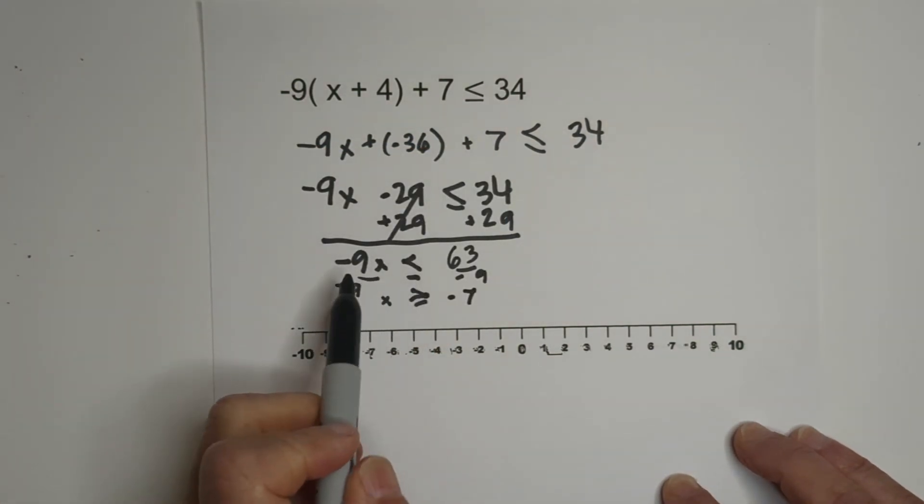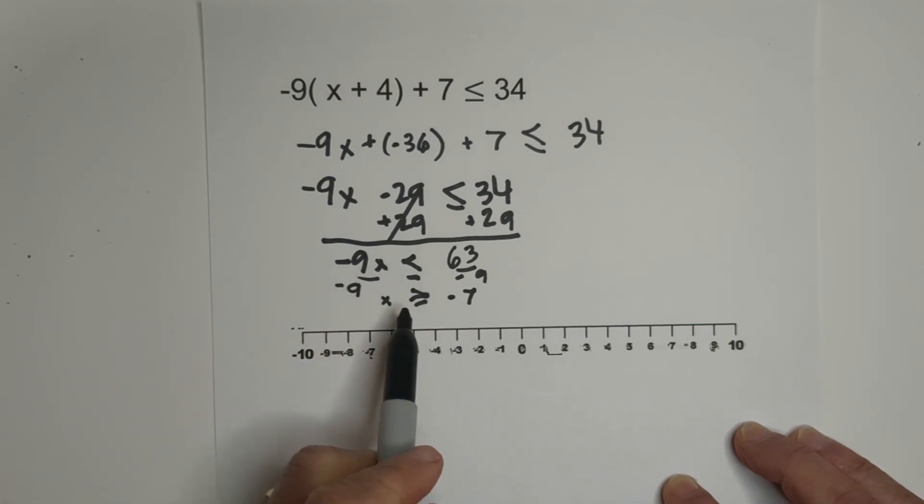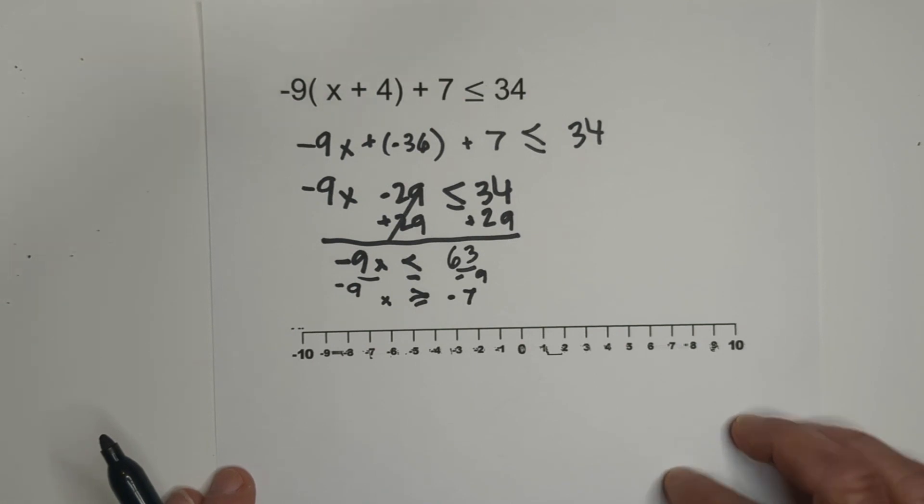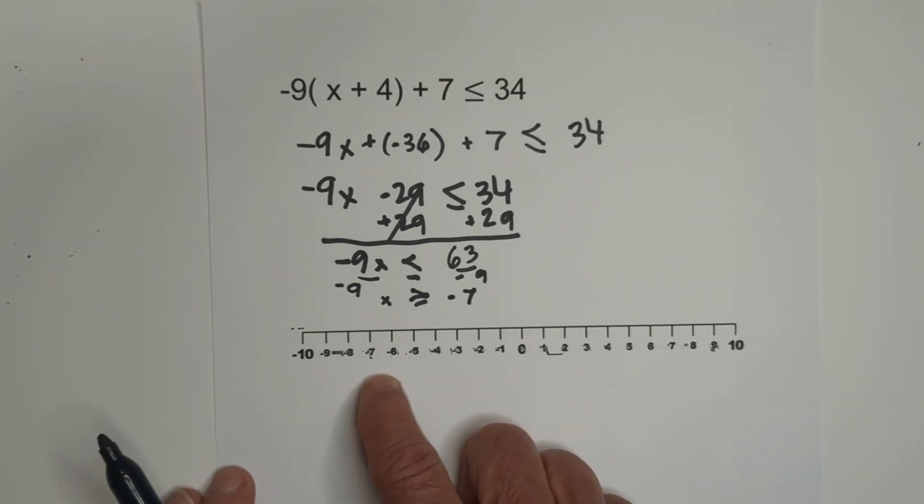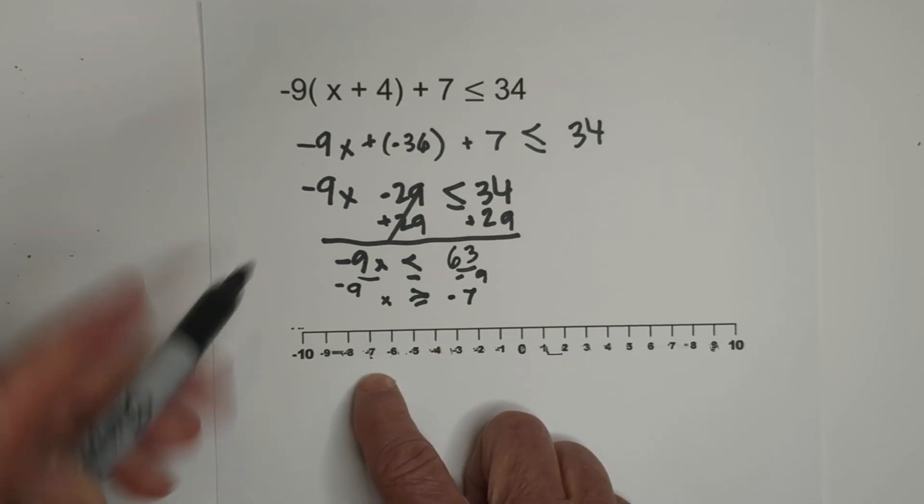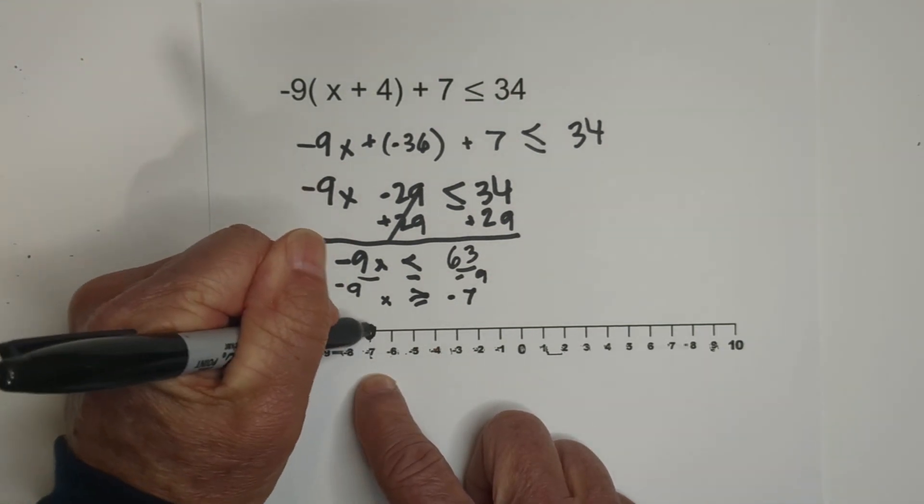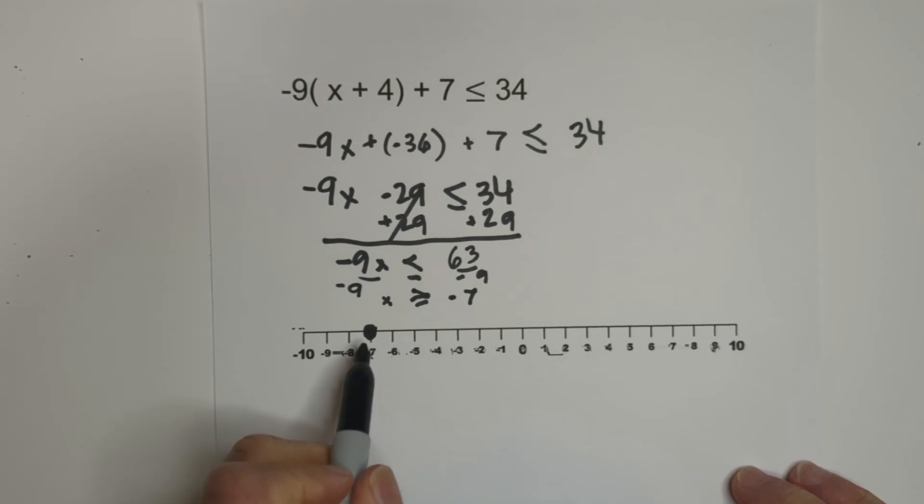Now we're going to graph. Remember, we divided through by negative sign, so we're going to flip the sign. Now we have negative 7. We flip the sign. Now it is greater than or equal to negative 7. We're going to use a closed circle because it includes the 7. And then it will look like this. I hope that was helpful. Thanks for watching.